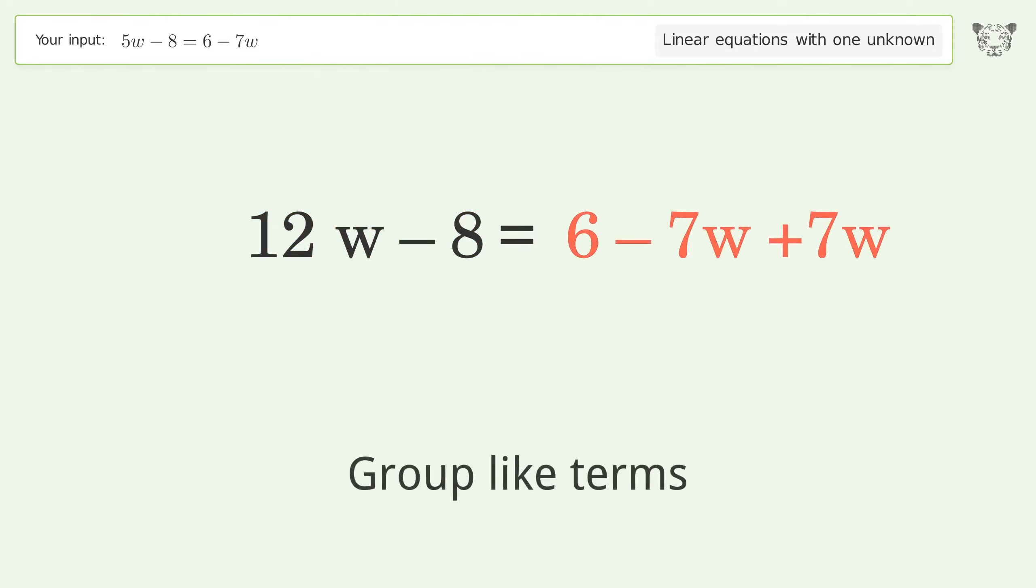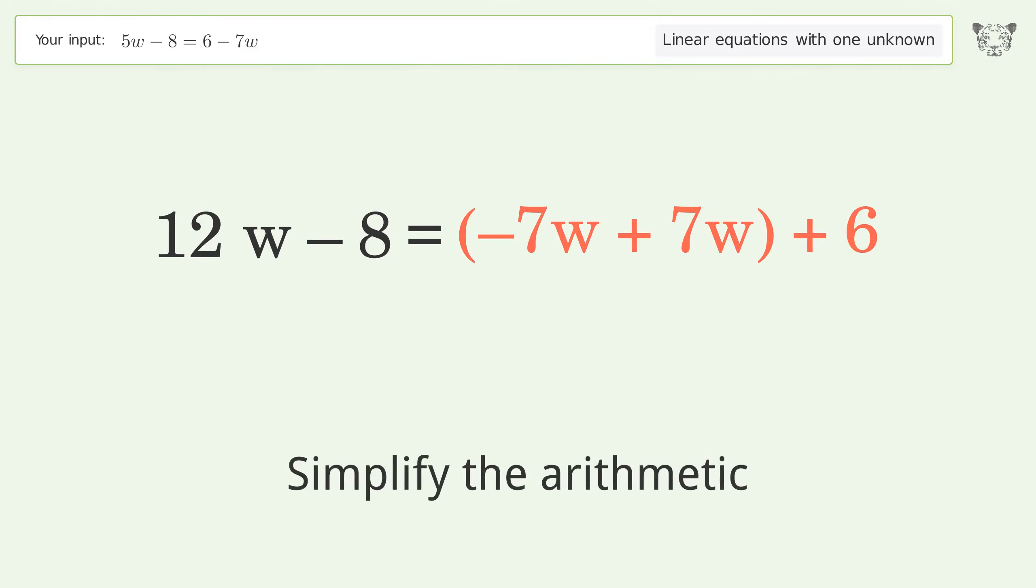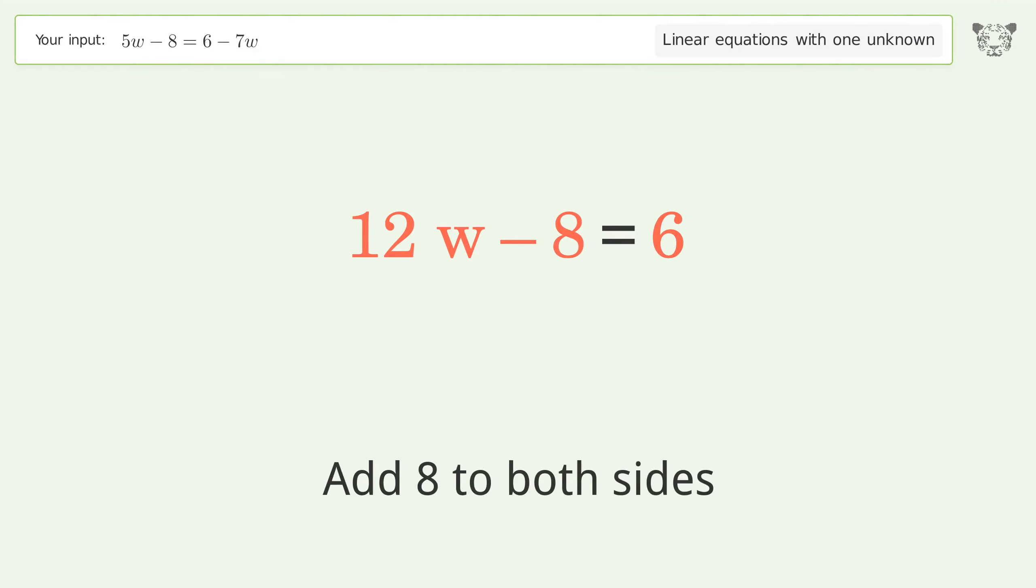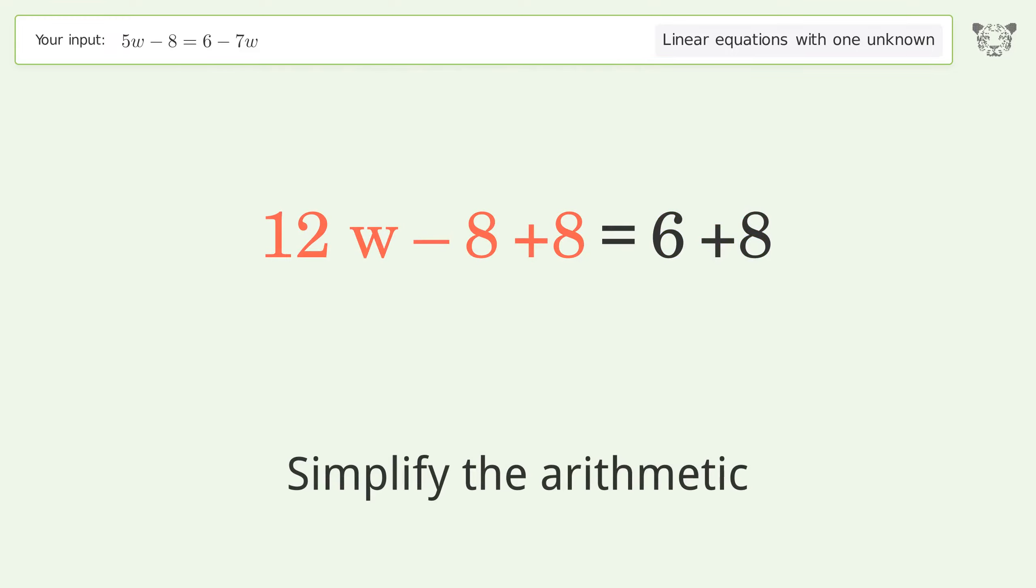Group like terms. Simplify the arithmetic. Group all constants on the right side of the equation. Add 8 to both sides. Simplify the arithmetic.